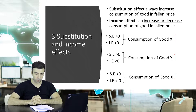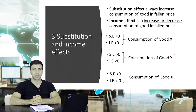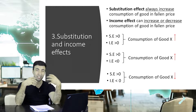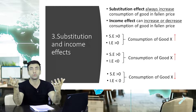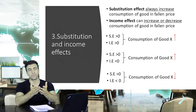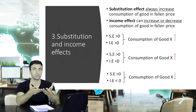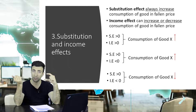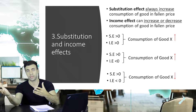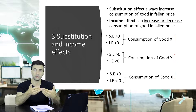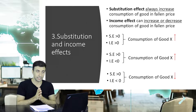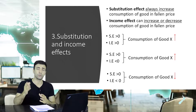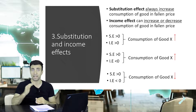Let's explain what the substitution effect and income effect are. When the price of good X decreases, there is a substitution effect that shifts consumption toward more of good X. If the price of some good X decreases, you will buy more of that good. The substitution effect always increases consumption of the good whose price has fallen.